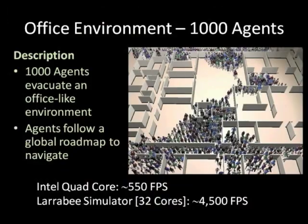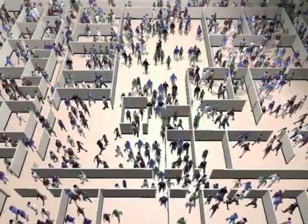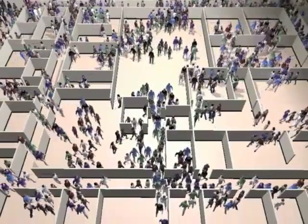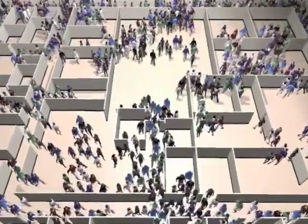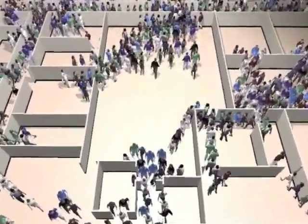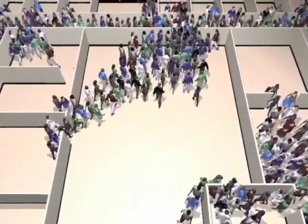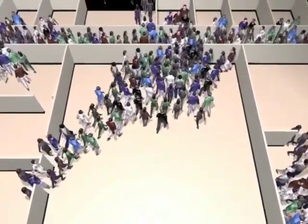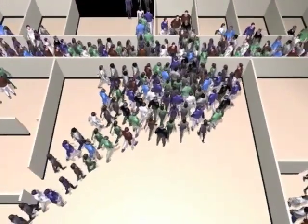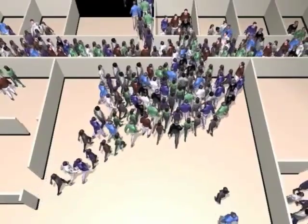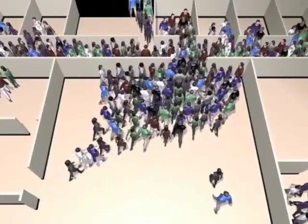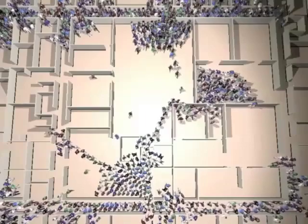This is the same evacuation drill, but now with 1,000 agents. This simulation runs at over 550 FPS on the quad-core and 4,500 FPS on Larrabee. As congestion forms at exits, agents can clearly be seen to form arches. This is another phenomenon commonly reported in crowds of real humans.